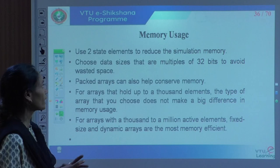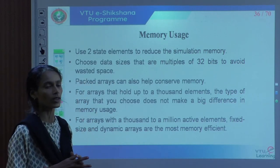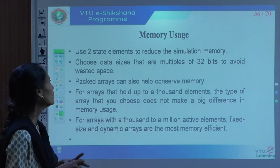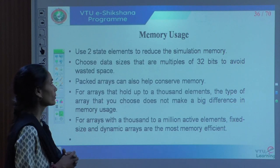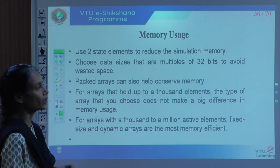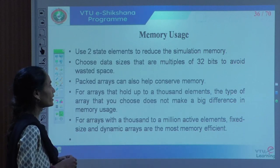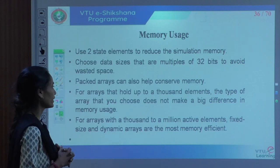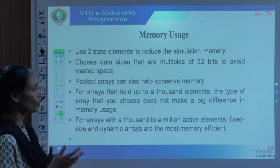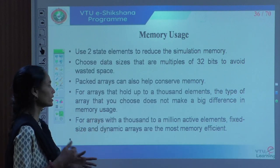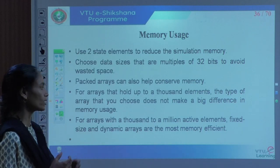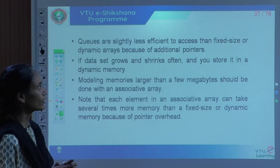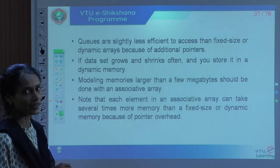With respect to memory usage, it is better to go for only two-state elements — logic 0 and logic 1 — specifically the data type 'bit', which will not assign a memory location for high impedance or unknown values. Use two-state elements to reduce simulation memory, and choose data sizes that are multiples of 32 bits to avoid wastage of space. Packed arrays can also help conserve memory because they use consecutive memory. For arrays that hold up to a thousand elements, the type of array does not make much difference, but for a million active elements it is better to go for dynamic or associative. Queues are slightly less efficient because they require an additional pointer.